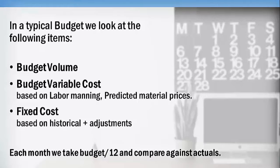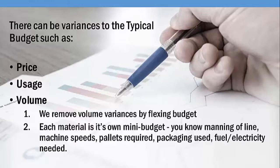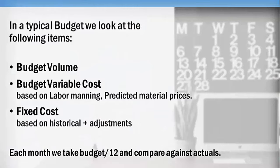These costs will vary directly with how many units we expect to make. Then fixed costs may be administrative, may be rent — it's generally based on historical costs plus future adjustments like inflation rates. Non-manufacturing costs are simply taken by most companies as yearly costs and divided into the number of periods in the year to develop flat period costs or plan.